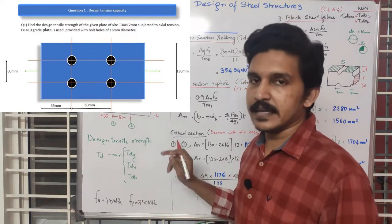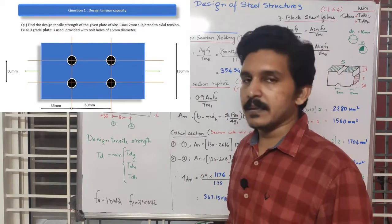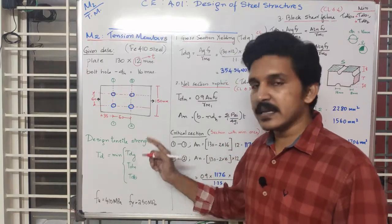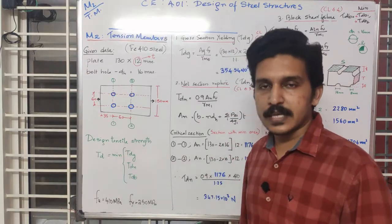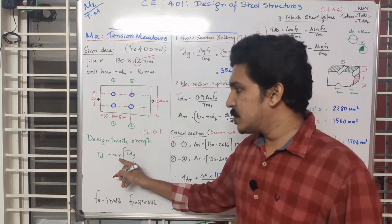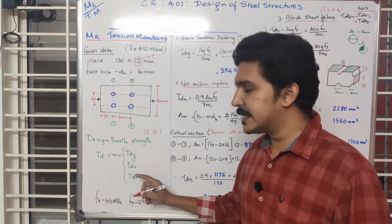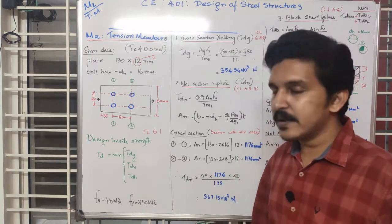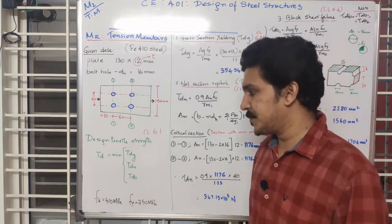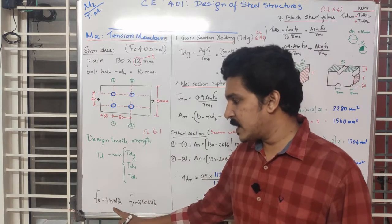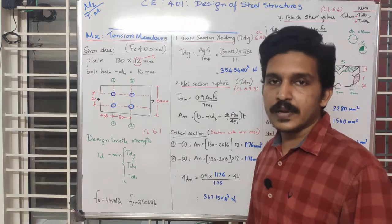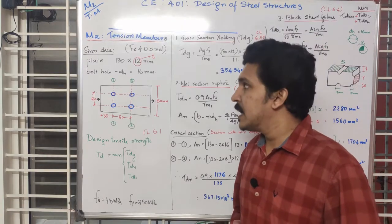We need to find the design tensile strength of the plate, which is TD. TD equals the minimum of TDG, TDN, and TDB. The value of FU for FE410 steel is 410 MPa and the yield strength FY is 250 MPa.